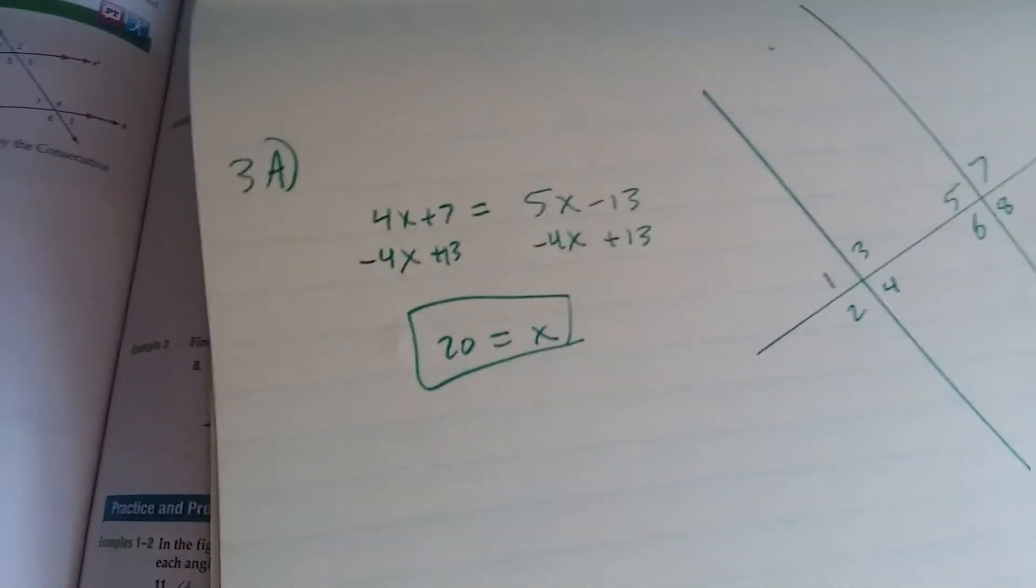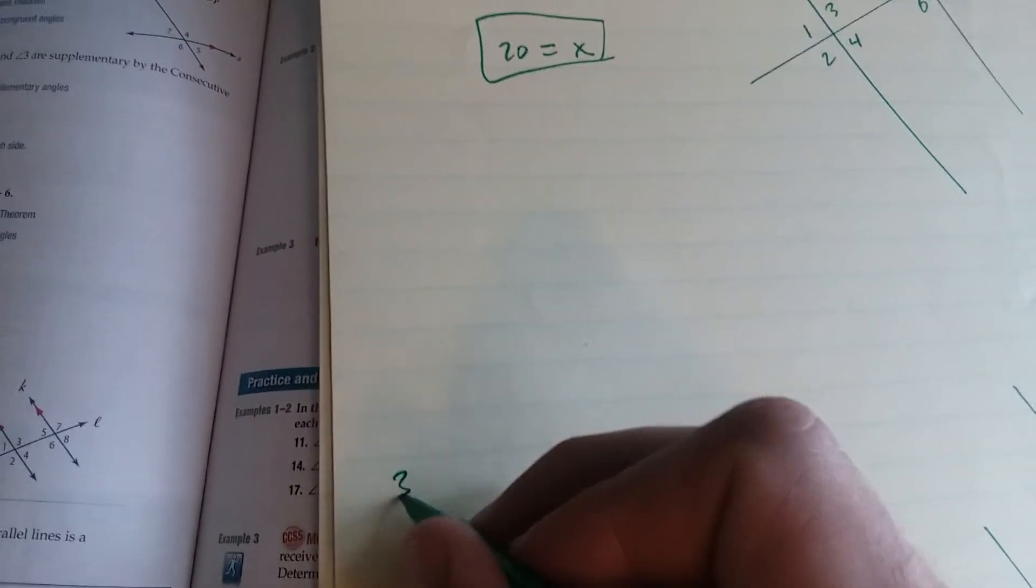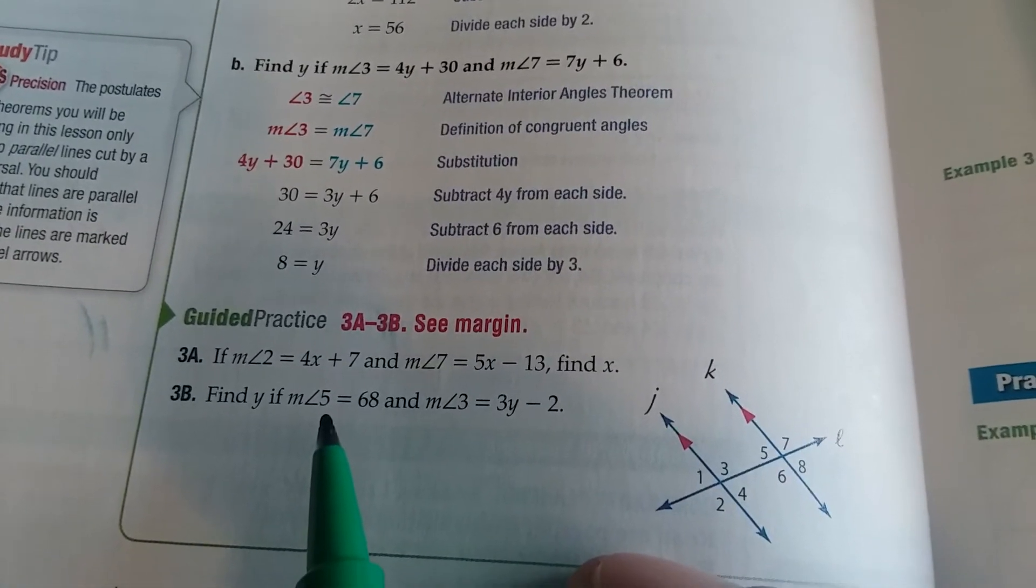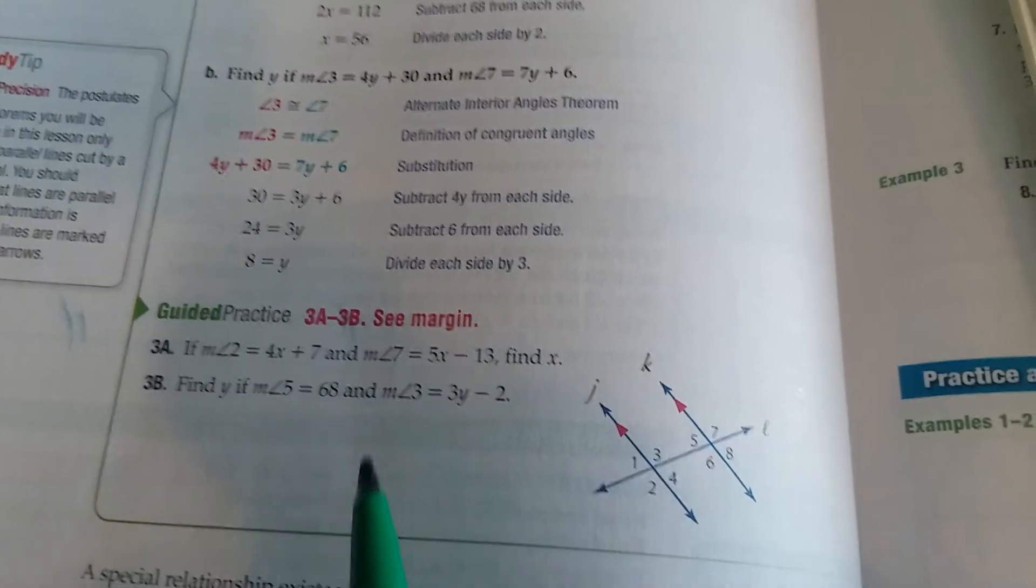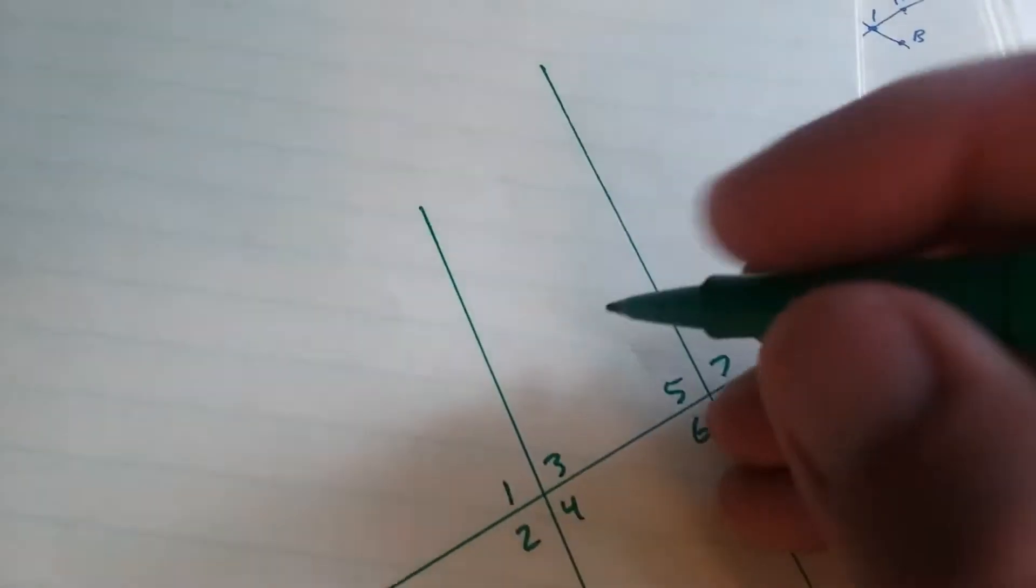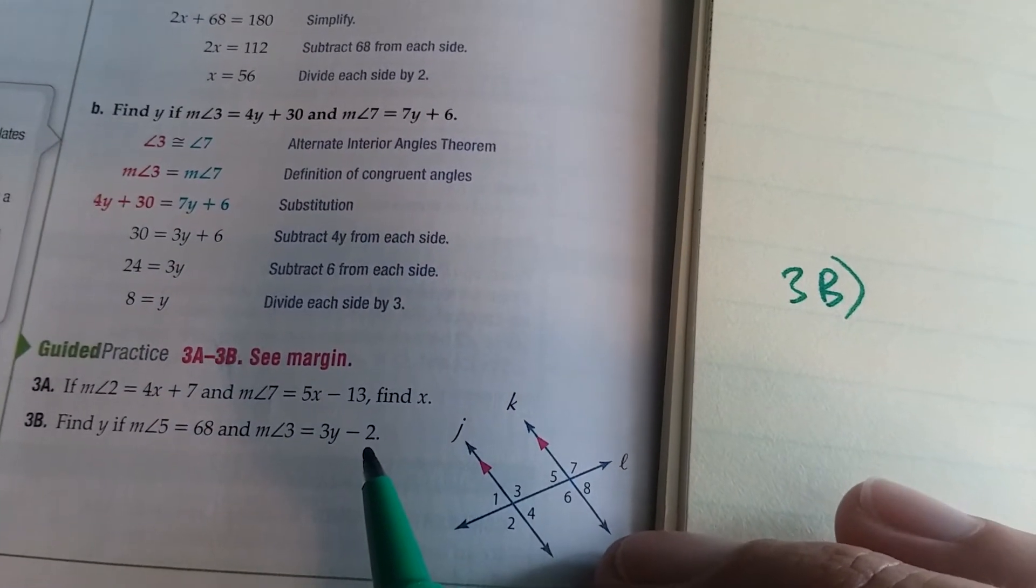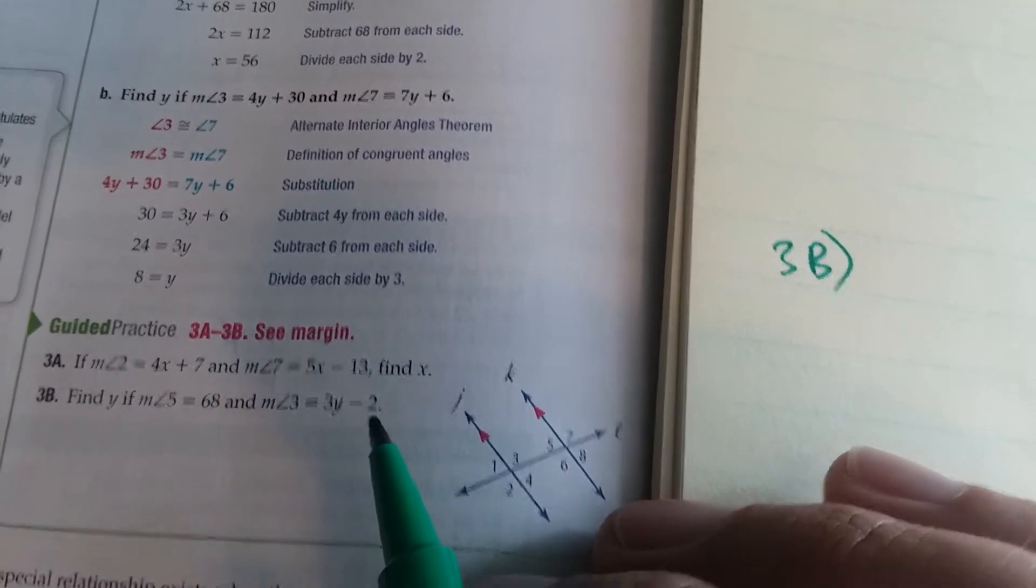3b. Find y if the measure of angle 5 is 68. So this angle is 68 and the measure of angle 3 is 3y minus 2.